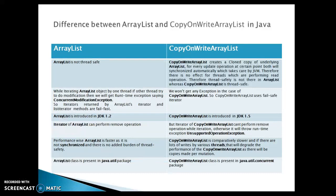Thread safety in CopyOnWriteArrayList is achieved in a slightly different way. CopyOnWriteArrayList basically uses a re-entrant lock to make the class thread-safe. CopyOnWriteArrayList creates a cloned copy of the underlying ArrayList for every update operation, and at a certain point both copies will synchronize automatically, which is taken care of by the JVM. Therefore, there is no effect on threads which are performing read operations. So thread safety is not present in ArrayList, whereas CopyOnWriteArrayList is thread-safe.